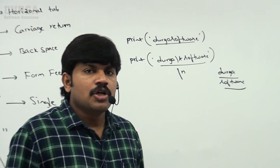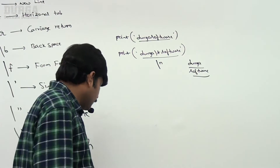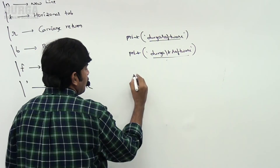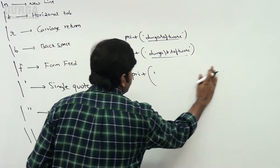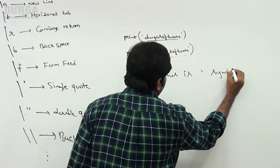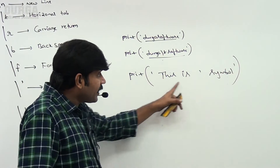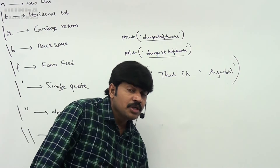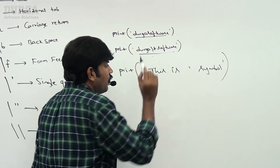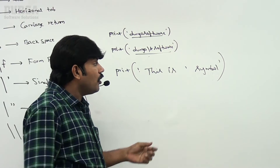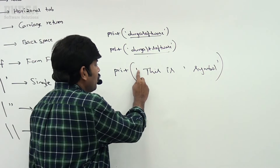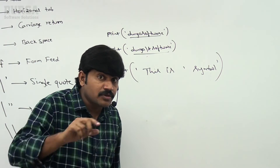Sometimes my requirement is to use a single quote as a symbol. For example, print of 'This is single quote symbol' — if I use single quotes here I may get an error, because the single quote closes the string. So we have some alternative ways: enclose using double quotes or triple quotes.